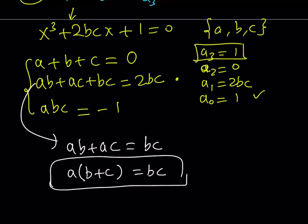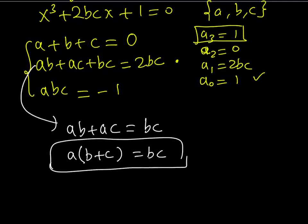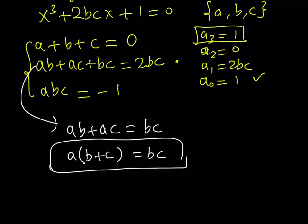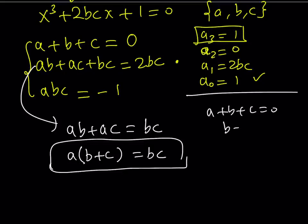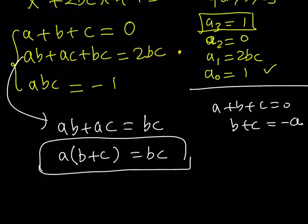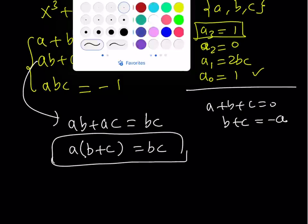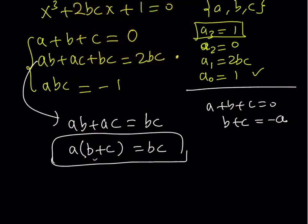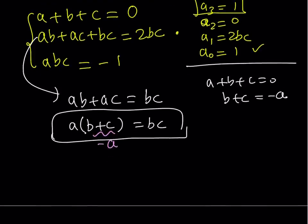From the first equation, a plus b plus c equals 0, so b plus c equals negative a. Substituting that into our factored equation gives a times negative a equals bc, so bc equals negative a squared.